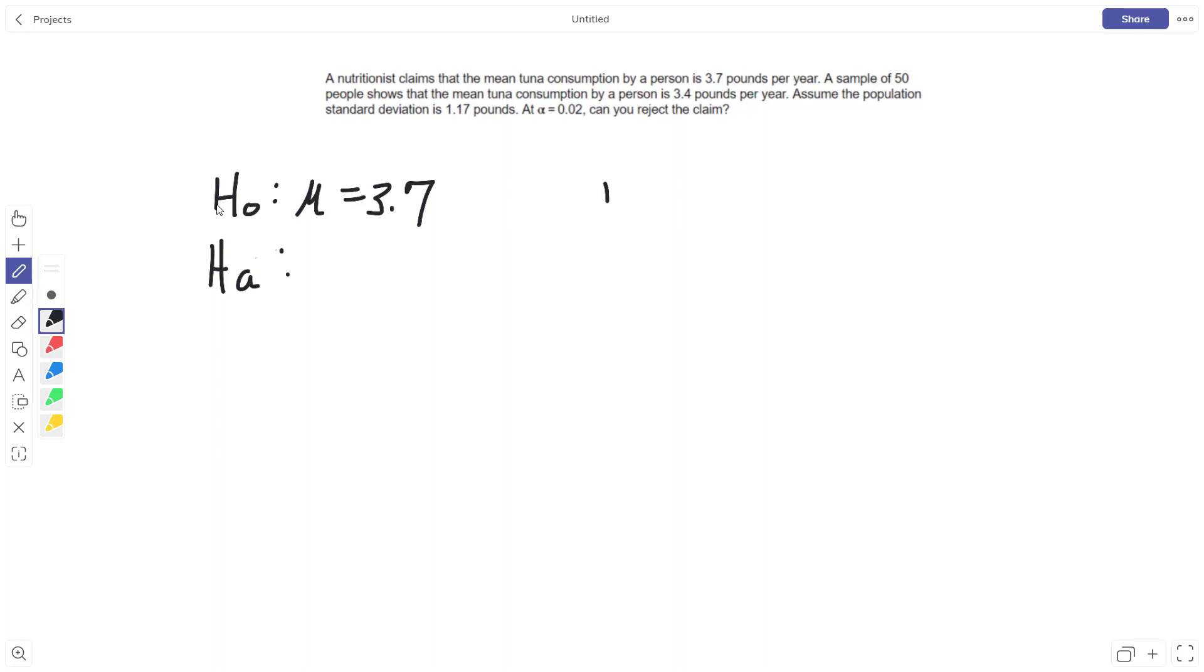A sample of 50 people shows that the sample mean was 3.4. Assume the population standard deviation is 1.17, and we'll test this at alpha of 0.02. There's nothing that says is it greater than or less than. Basically, we just want to see is there a difference, and that would be an alternative of a not equal.